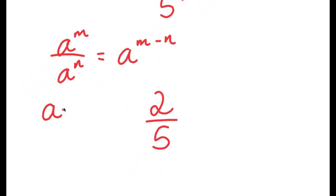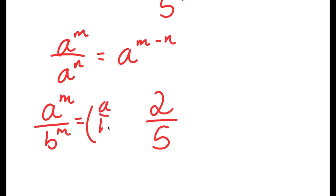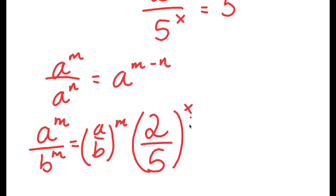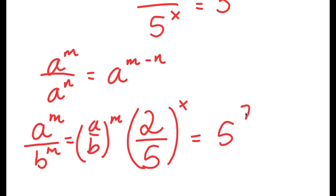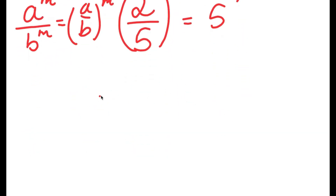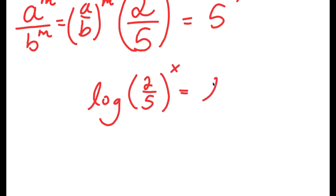Another property is that if I have something in the form a to the power of m over b to the power of n, this is equal to a over b to the power of m. So 2 over 5 to the power of x is equal to 5 to the power of 7.